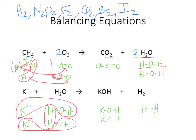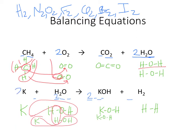Let's look at that in terms of the letters themselves. Notice I have one K on the left, one K on the right, two H's on the left, and three H's on the right. To fix that, I'll put a 2 on the right, which gives me four hydrogens, and a 2 on the left, which gives me four hydrogens. When I did that, that's two oxygens — but I already put a 2 in front of the KOH, so that's two oxygens. Then I'll add a 2 in front of the potassium, so the potassium's balanced, and now I have a balanced equation.